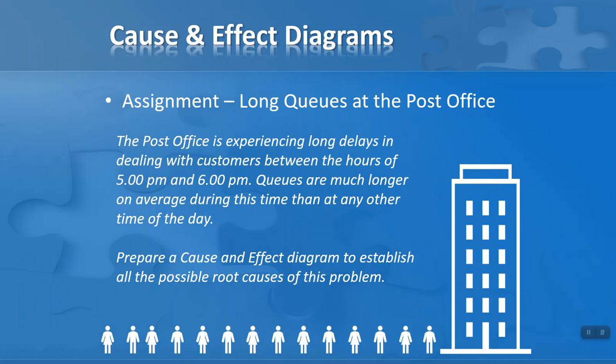In the assignment that comes after the how-to video, I'm going to ask you to draw a cause and effect diagram for a problem—a simple problem that I've thought up here: long queues at the post office. Let's take a look at the scenario. The post office is experiencing long delays in dealing with customers between the hours of 5 p.m. and 6 p.m., so that would be an unusual time.